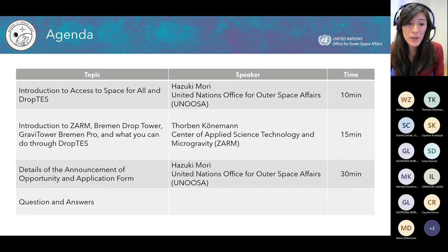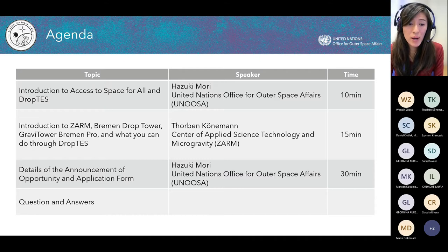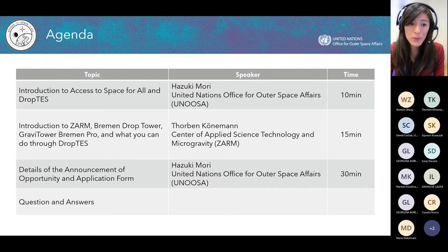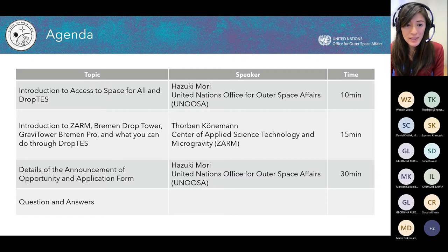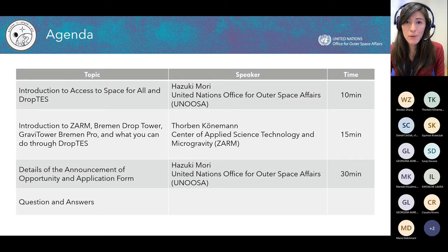Today's agenda: I will start with an introduction to the Access to Space for All initiative and Drop Tests. After that I will hand the floor to our partner ZARM — Thorben Koenemann — who will give us an introduction to the Bremen Drop Tower, the Gravity Tower Bremen Pro, and what you can do through drop tests. Then we'll go into the details of the Announcement of Opportunity and application form, followed by a dedicated Q&A.